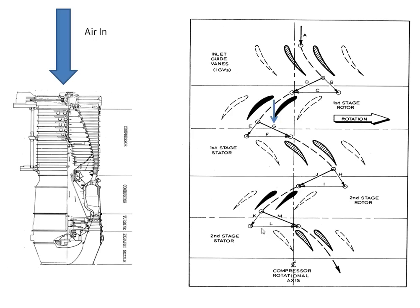Air flowing into the engine will be coming in this direction. It will follow the contours of the inlet guide vanes and will approach the rotating rotor blades in that direction. But the rotor blades have a velocity — the blades are rotating in this direction — so the relative airflow across the blades will be in that direction. The air that the rotor blades sees is a combination of these two factors, which is that resultant relative airflow.